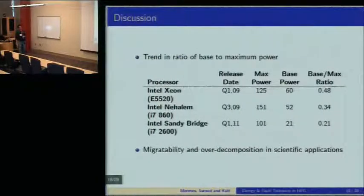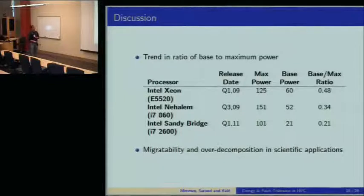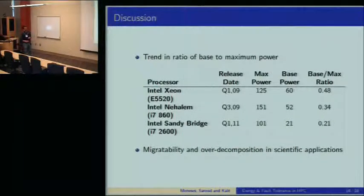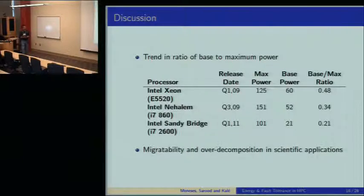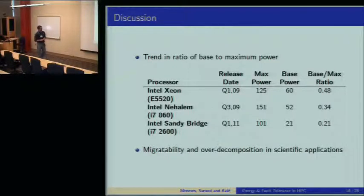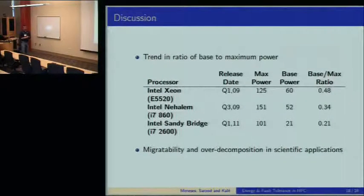A couple of discussion points. The ratio between base and max power in our architecture is 0.48, but recent processors have a much smaller ratio, which means checkpointing will become even cheaper in terms of energy and will likely increase the optimal checkpoint frequency. Also, migratability and overdecomposition allow more work units per node, which can be distributed among more nodes in case of failure, accelerating recovery. Overdecomposition is fundamental to all the savings in energy and execution time.